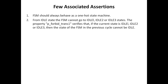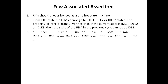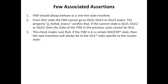Once we talk about associated assertions: first, the FSM should always behave as a one-hot state machine. Second, from the idle state, the FSM cannot go to idle-one, idle-two, or idle-three states. The property 'p_forbid_trust_one' verifies that if the current state is idle-one, idle-two, or idle-three, then the state of the FSM in the previous cycle cannot be idle.